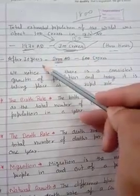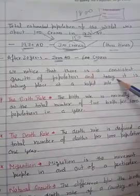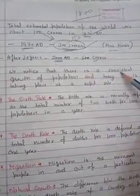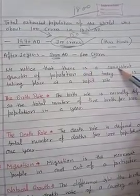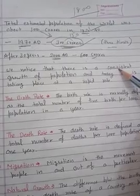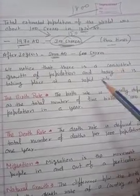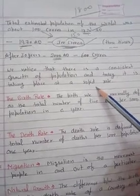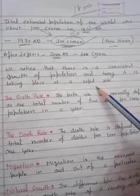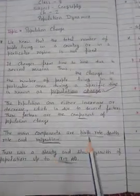We notice that there is a consistent growth of population, and today it is taking place at a rapid rate. So before 1800, world population grew very slowly, then reached 100 crore by 1820, tripled to 300 crore after 150 years, and doubled again to 600 crore in just 30 more years. Now the rate is increasing even faster.